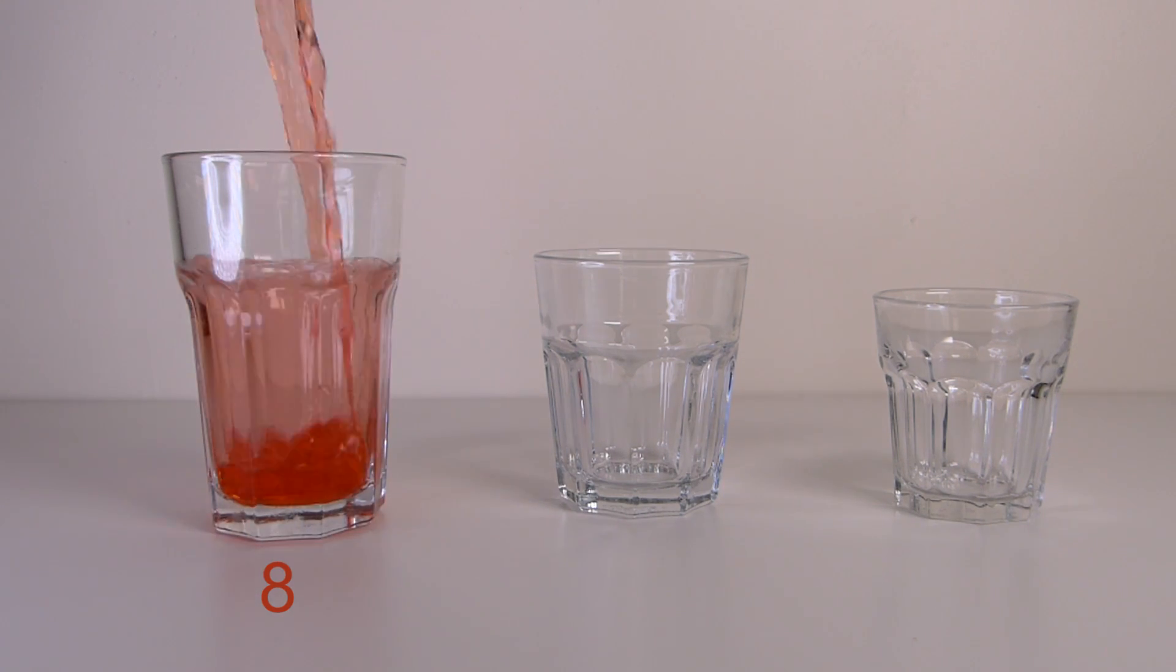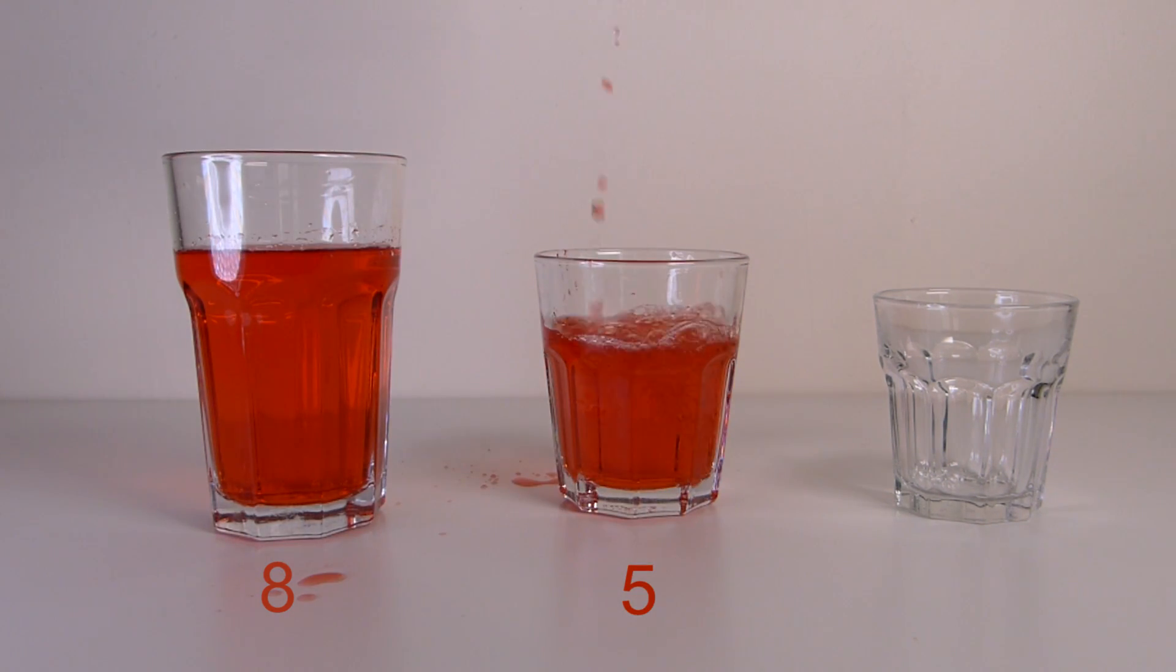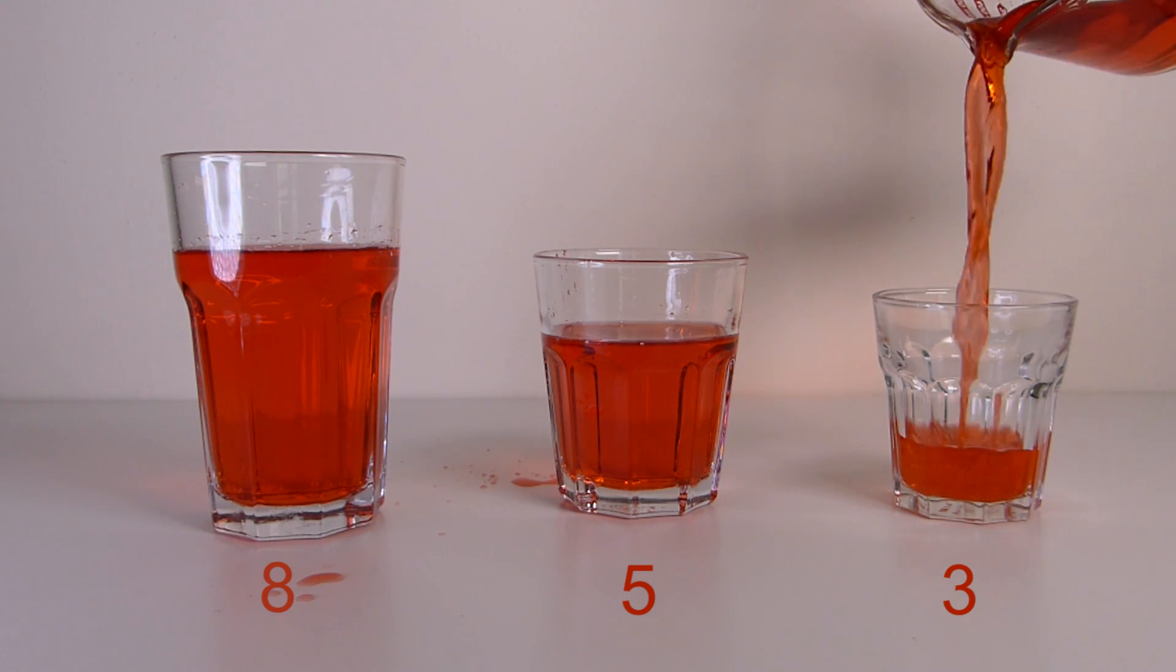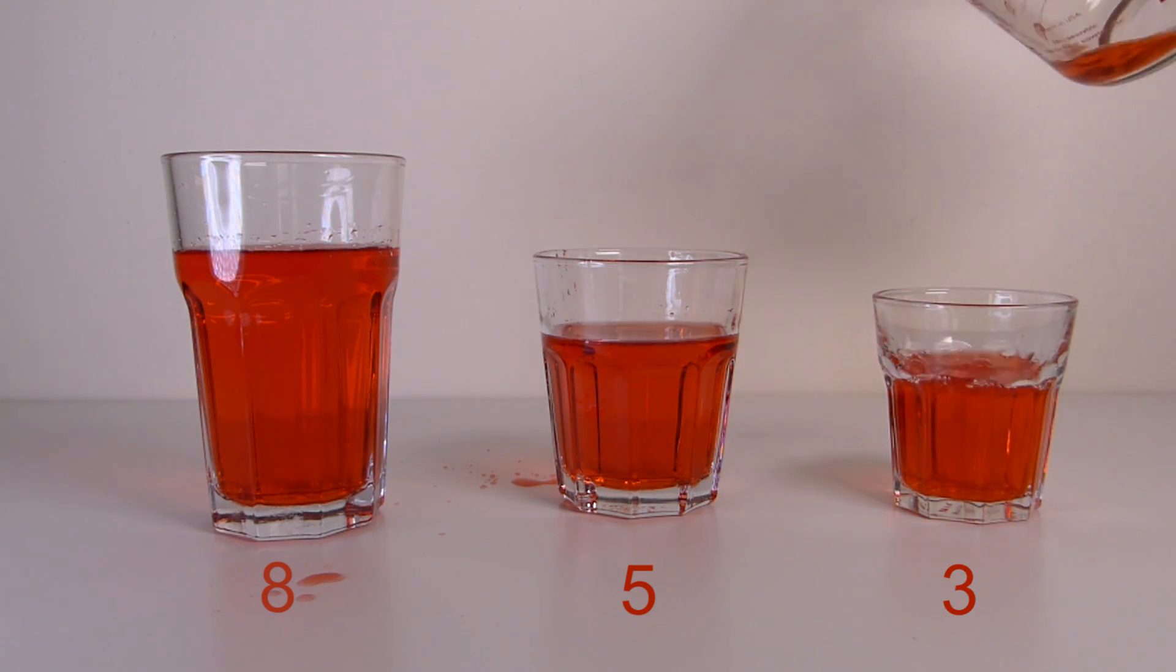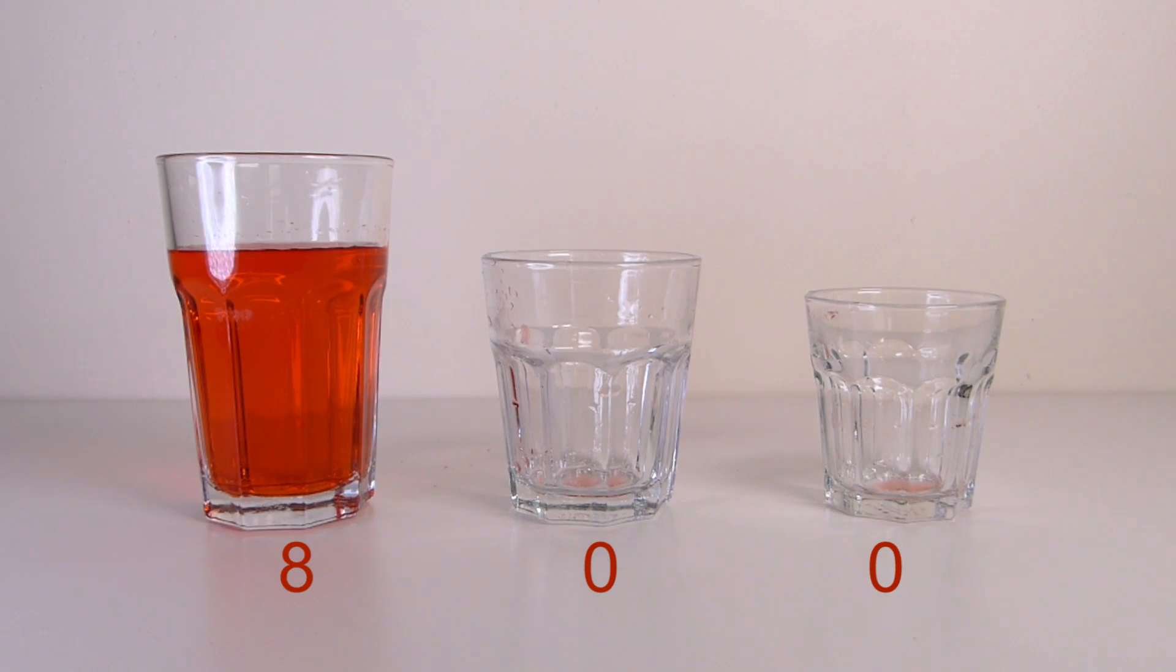The Three Glass Problem involves three glasses: an eight-ounce glass, a five-ounce glass, and a three-ounce glass. We need to make two servings of exactly four ounces each without measuring and without just eyeballing or guessing.